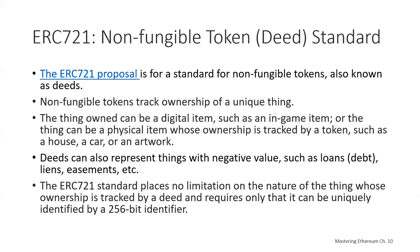ERC-20 just checked how many tokens you have. Now with ERC-721 we're tracking the provenance of a specific item. It's intended to reflect the ownership of property like real estate, even though smart contracts aren't technically legal documents. A thing owned can be a digital item such as a magical sword in a game, a digital collectible like digital artwork, or a reference to a physical item — like a physical artwork, a car, or real estate.